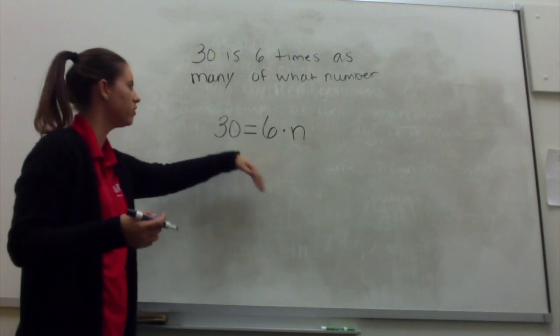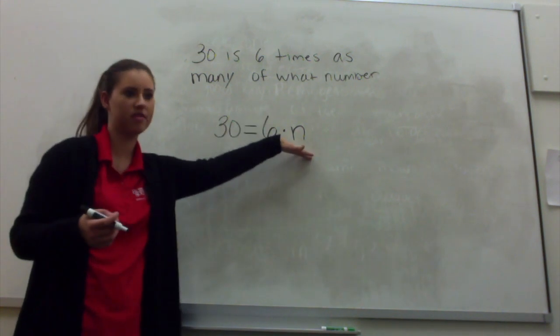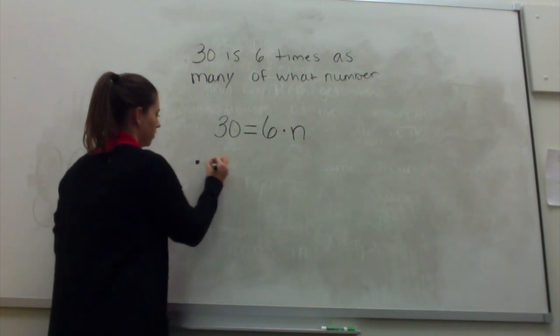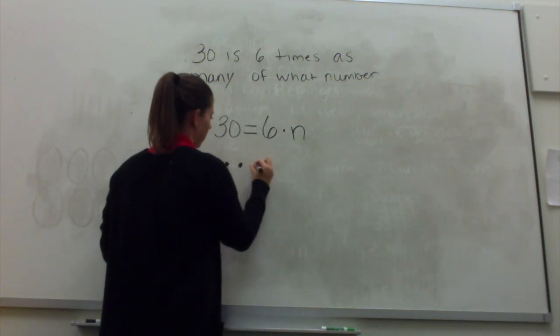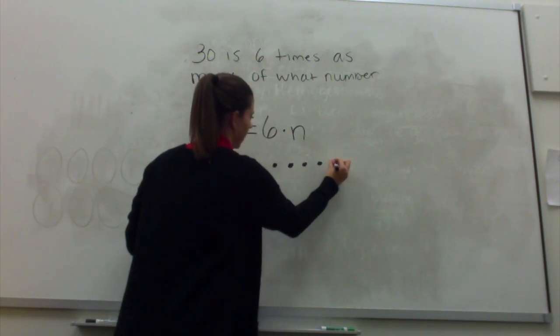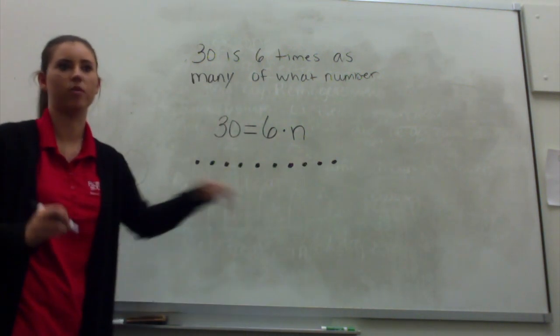Okay, so we know that we're multiplying 6 times something to give us 30. So I'm going to represent 30: 2, 3, 4, 5, 6, 7, 8, 9, 10. I want you to finish on your whiteboards representing 30.